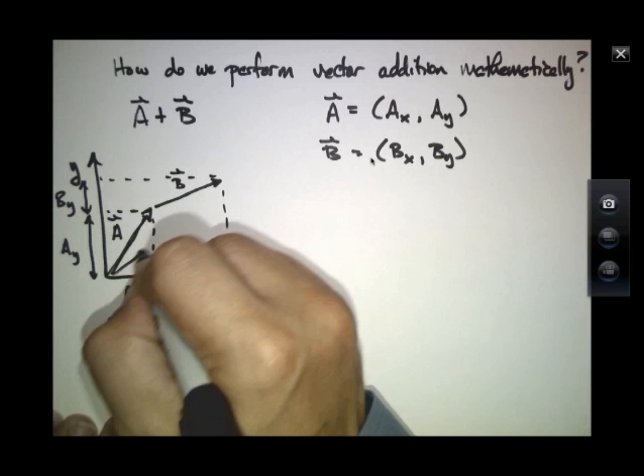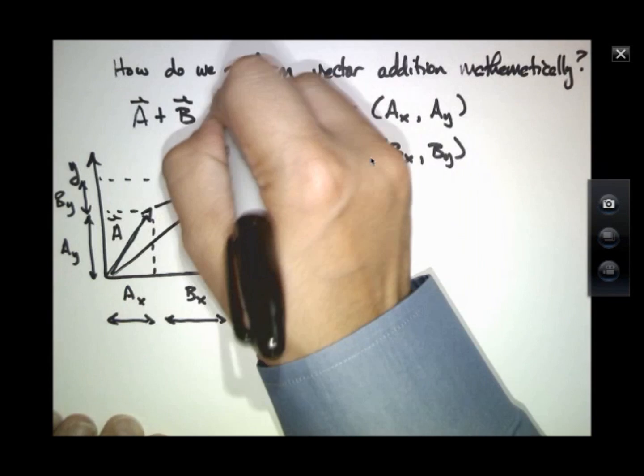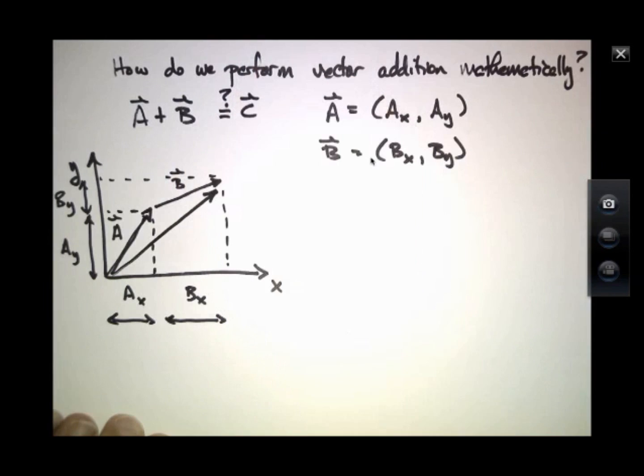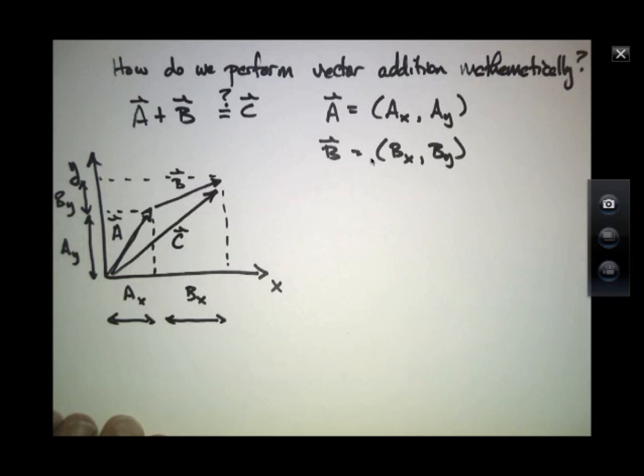So we're looking for a new vector, C, such that it would be the sum of A plus B. And how do we compute the coordinates of C?